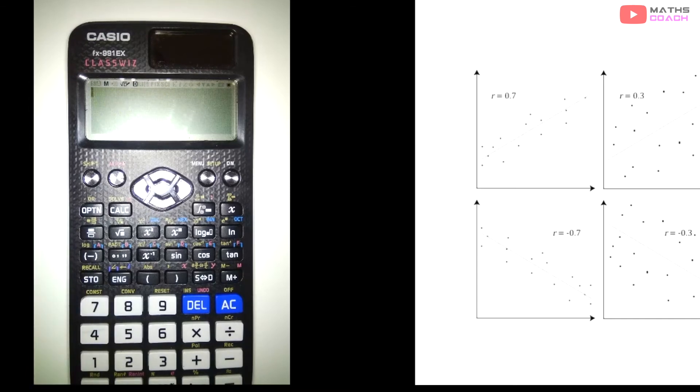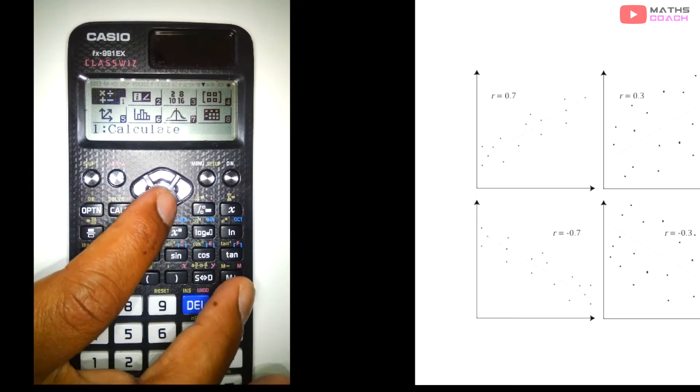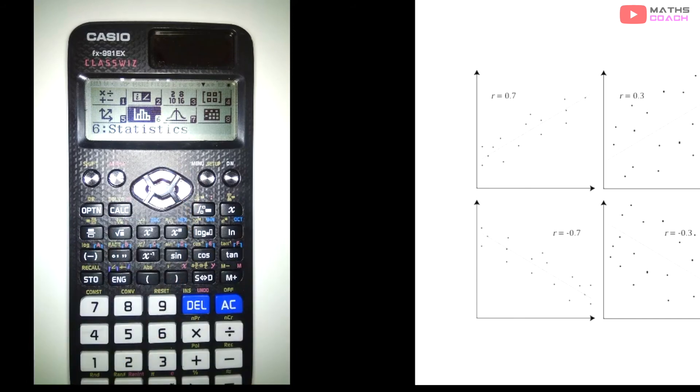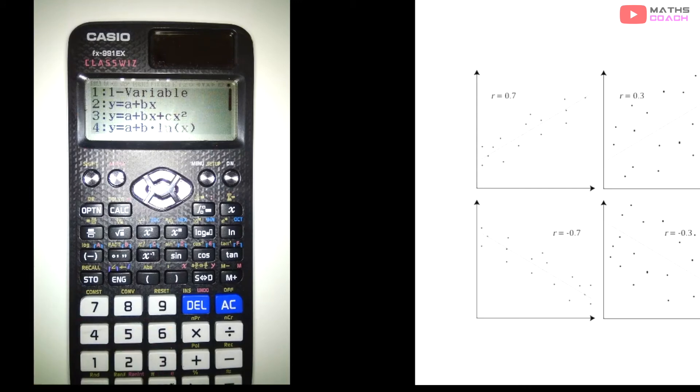Once you've done that, we go to our menu screen. You can see we can scroll down. You've got Calculate, Vectors, Statistics. We're going to need number 6, which is our statistics. Once you've got that, we need to know which category we're going to use. We're going to go for number 2. And if you look at number 2, it's Y equals A plus BX, which is simply our Y equals MX plus C, our linear line, our regression line. So we're going to go to number 2.